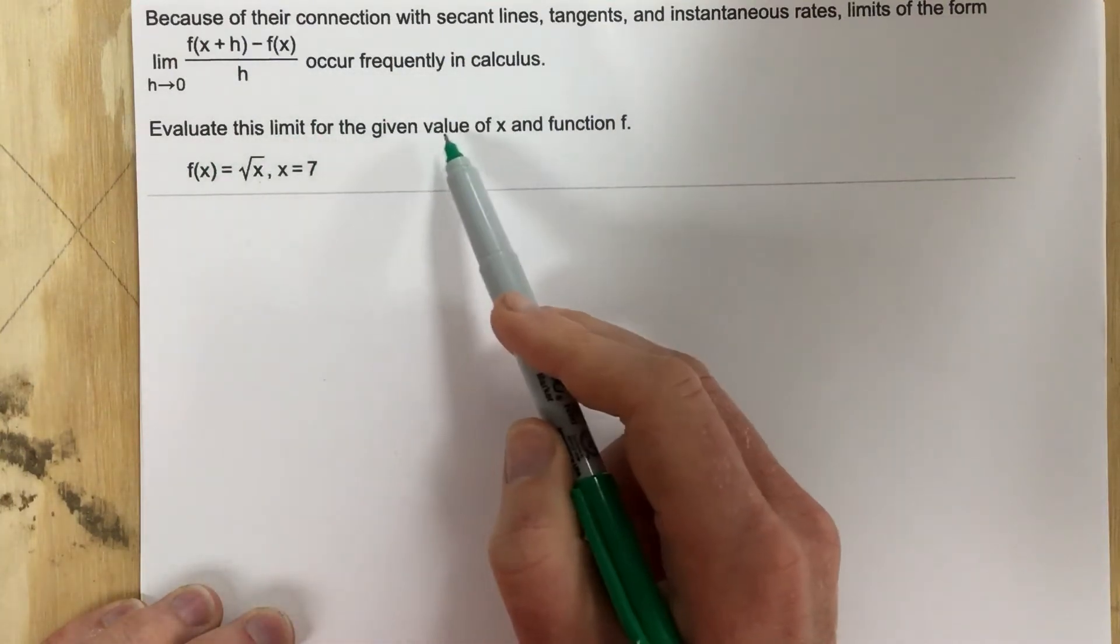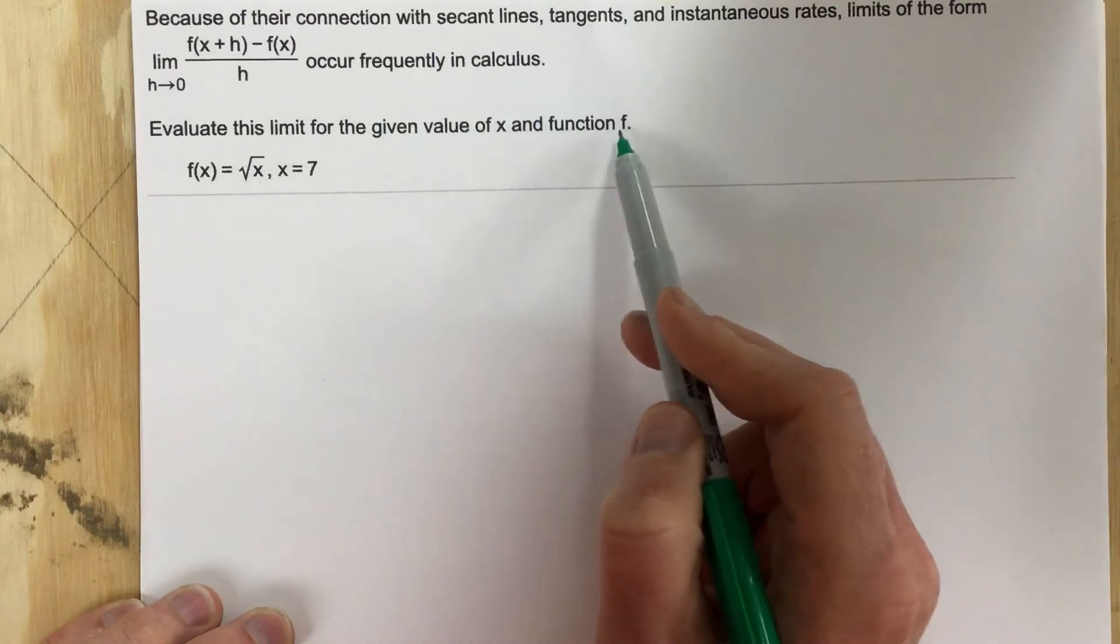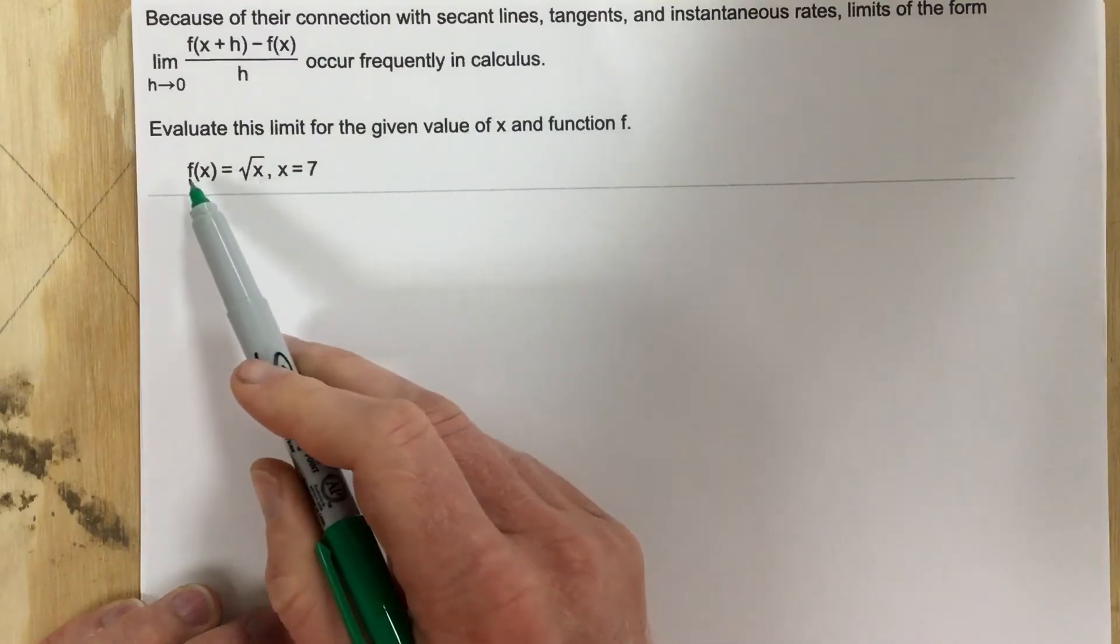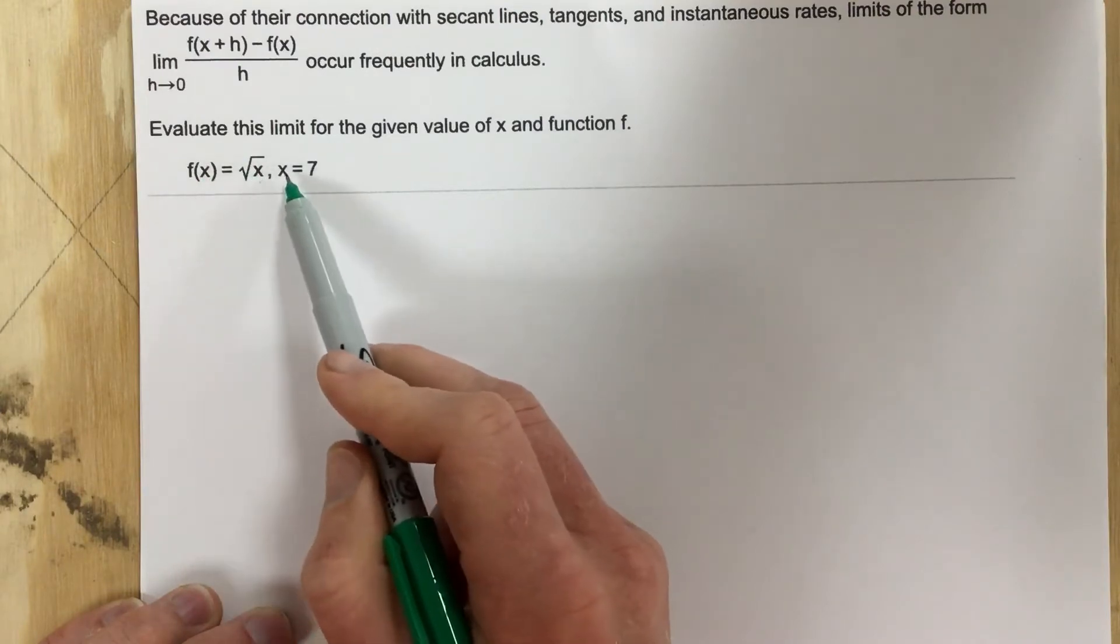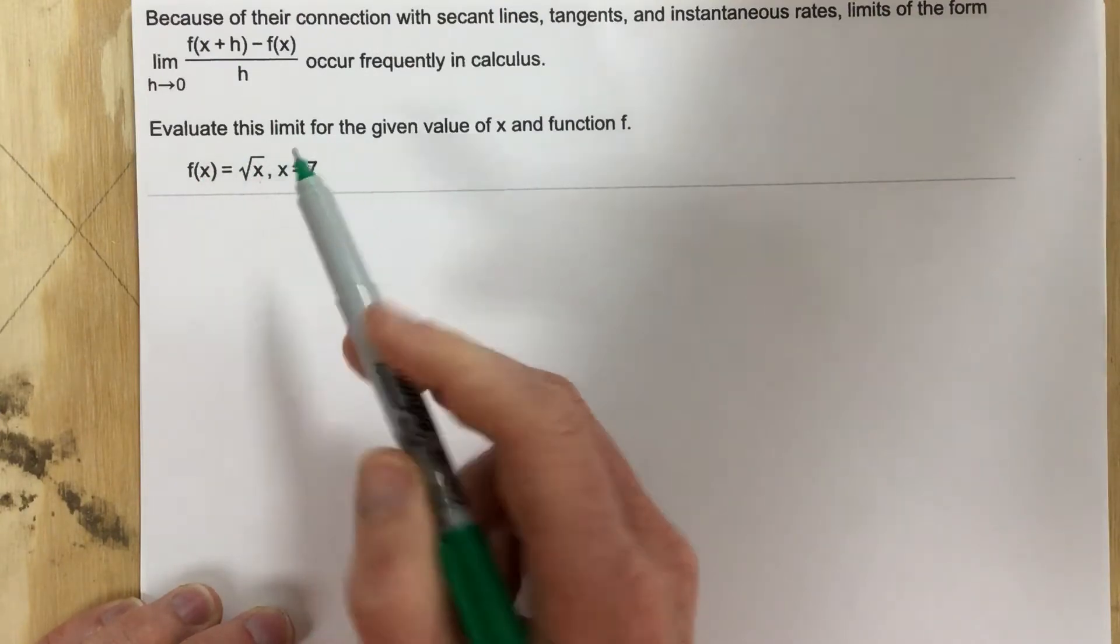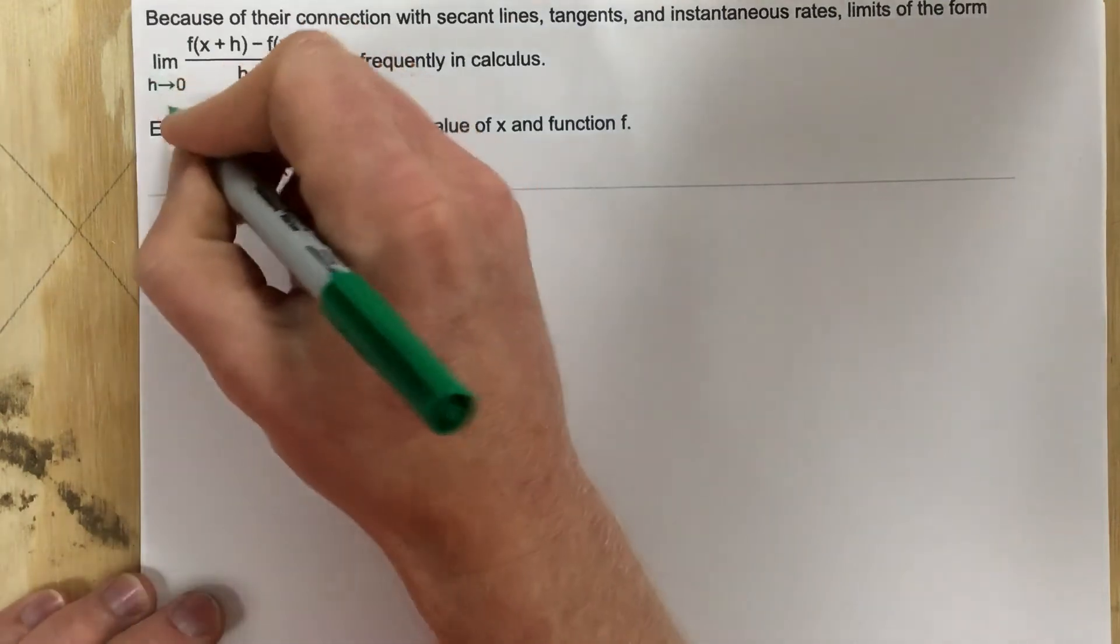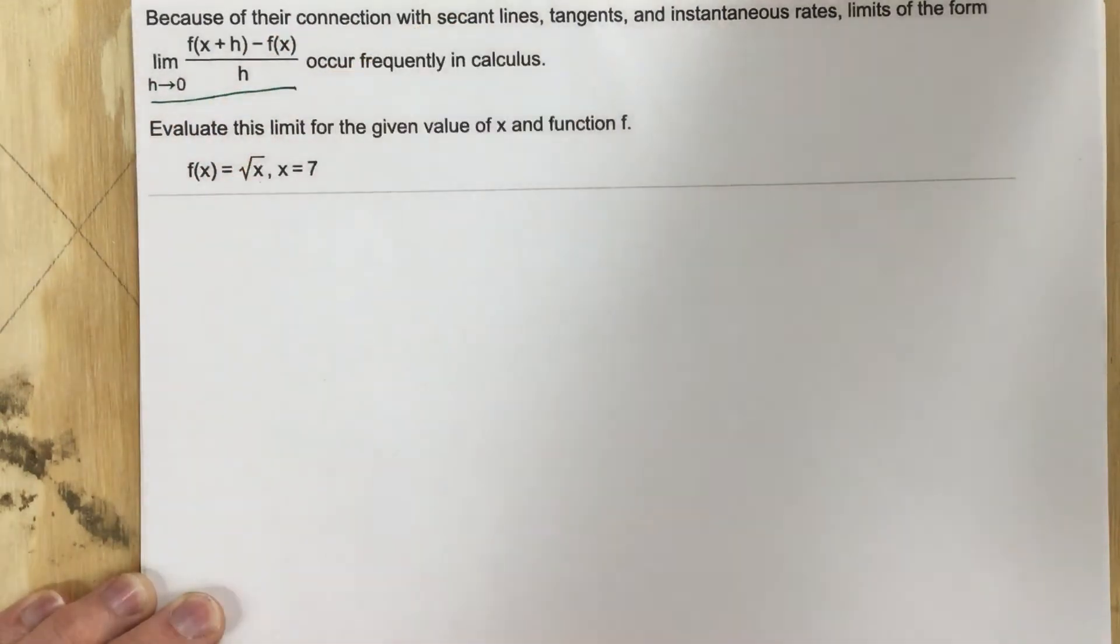Evaluate this limit for the given value of x and function f. So they give us the root function, f of x equals root x, and they want us to evaluate this for x equals 7. So what they're asking us for is the slope. This equation finds the slope.